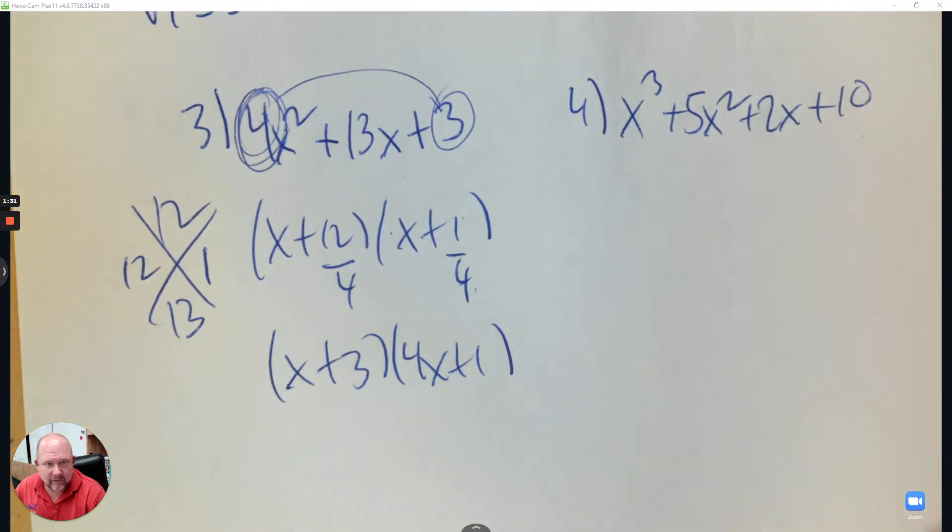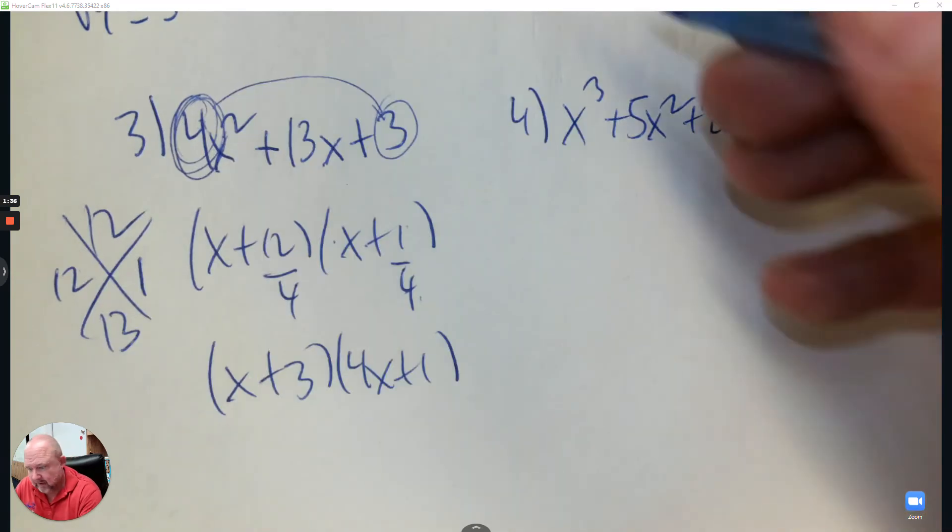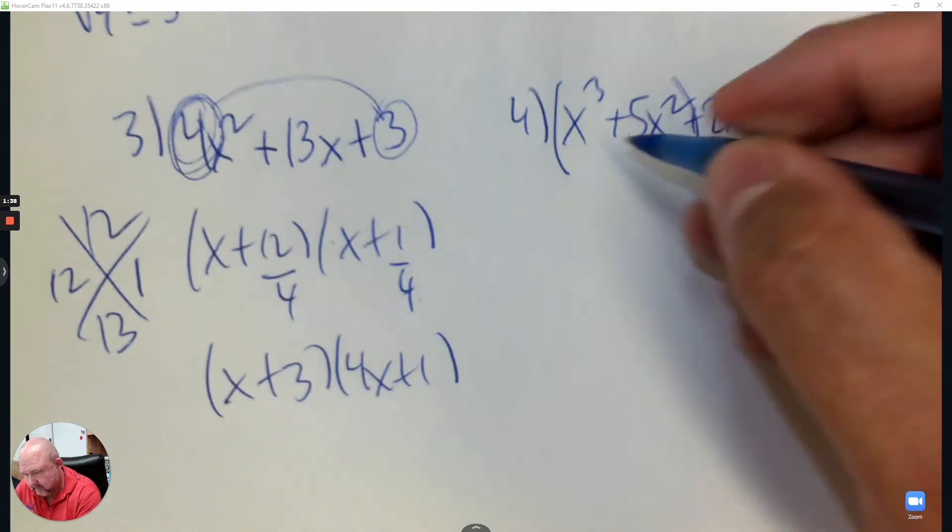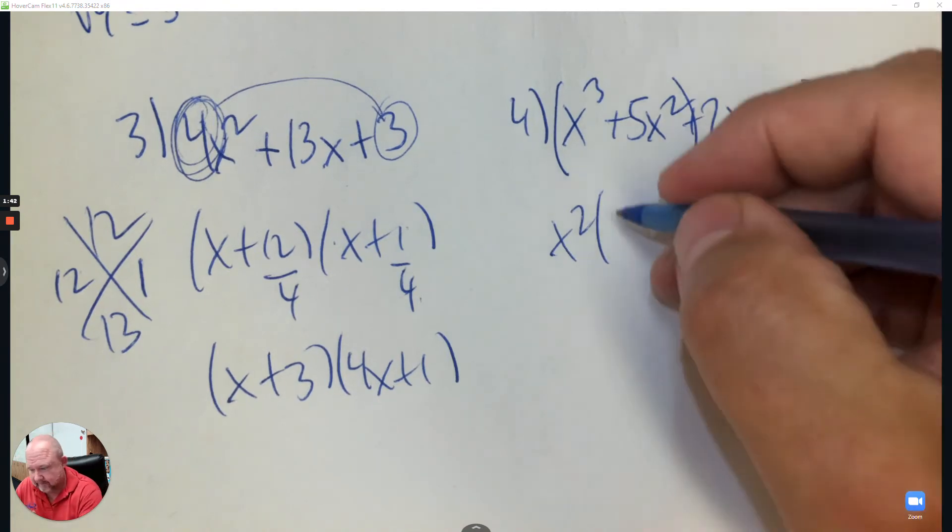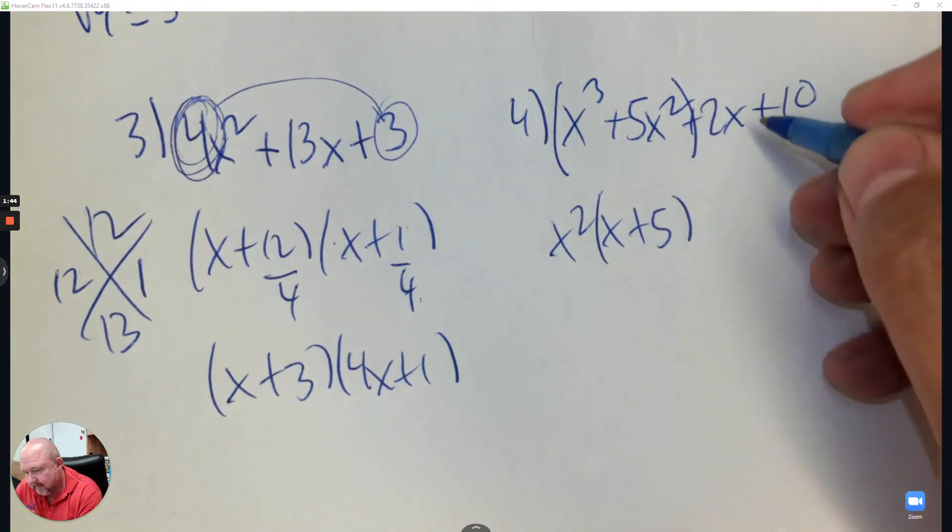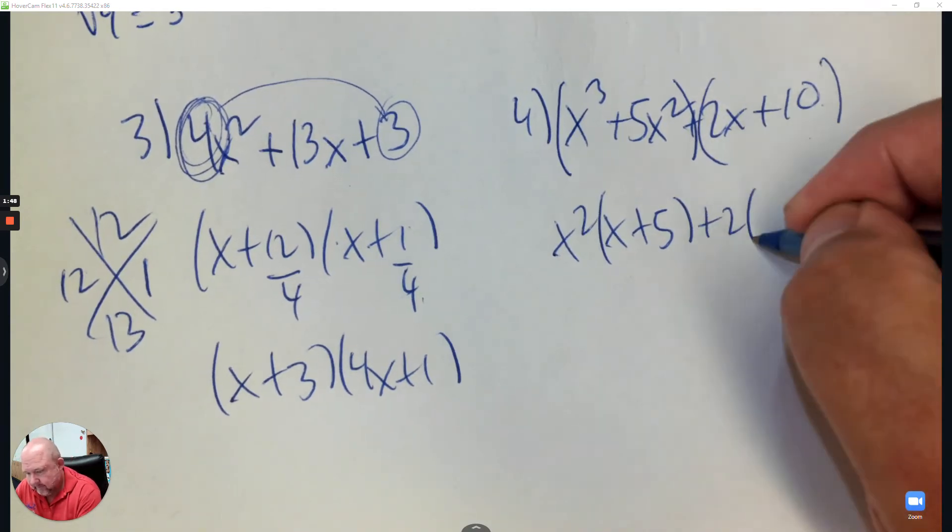All right, last one to review. We have how many terms here? This is grouping, right? So we're going to take the first two and factor out the least x, which is x squared, and then divide. Then I take the last two, and again, I'm going to factor out a 2 and then divide.